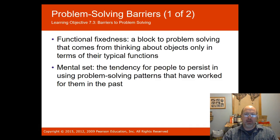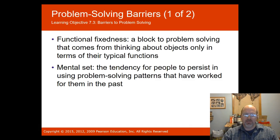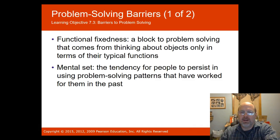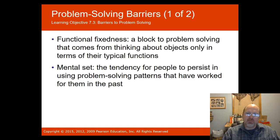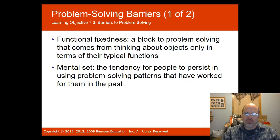Functional fixedness is a barrier to problem-solving — it's a block that comes from thinking about objects only in terms of their typical functions. For instance, I might use a water bottle as a flower vase, but someone might say you can't do that because the water bottle is only used for holding water. Sometimes we get stuck in a fixed form of solving problems based on functional fixedness.